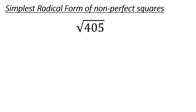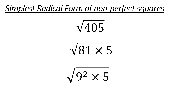Square root of 405 — this one can be pretty tricky. You can think of it as 81 times 5. Since 81 is a perfect square, you can think of it as 9 squared. Therefore, that 9 squared comes out front of the radical sign as a 9. So the simplified answer is 9 times the square root of 5. The square root of 405 would be some really long decimal going on forever — it's irrational — but you can simplify it by factoring out perfect squares.